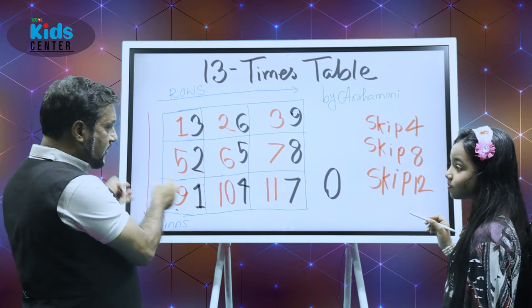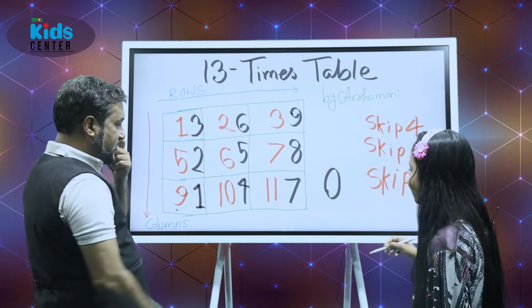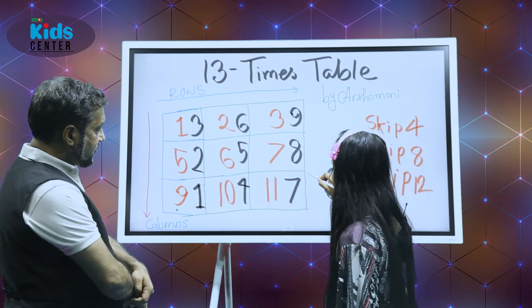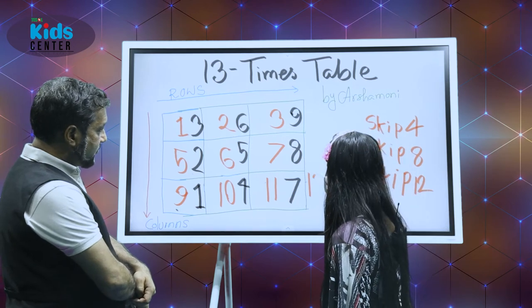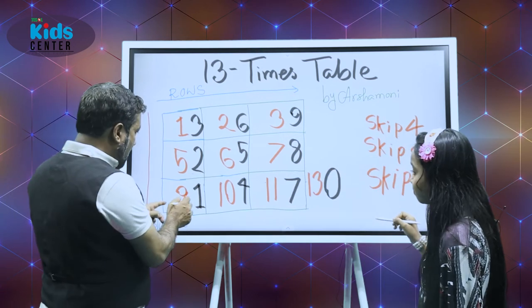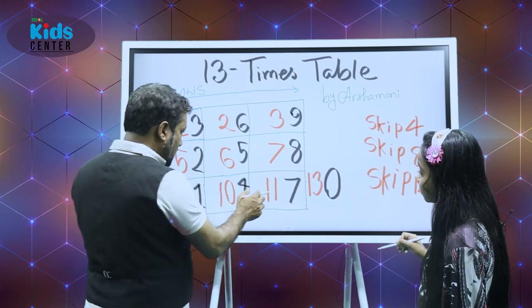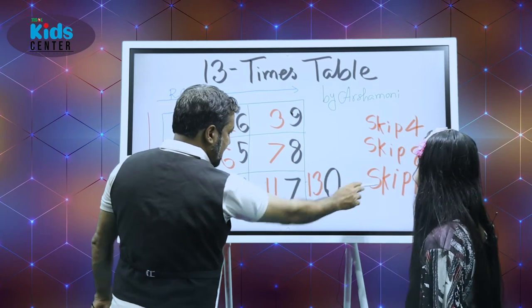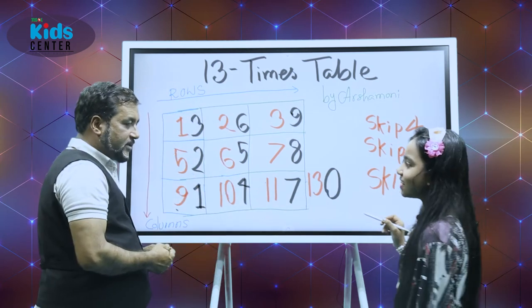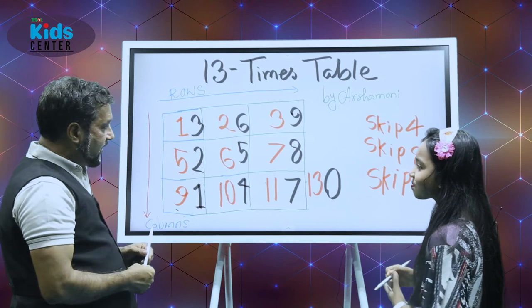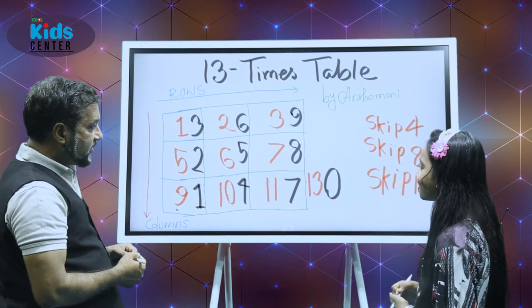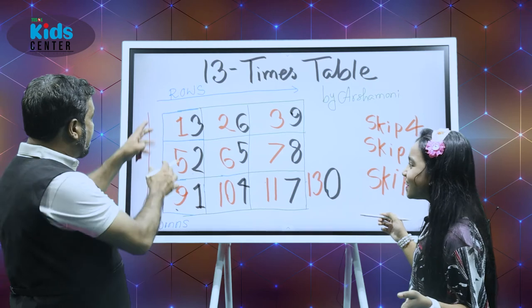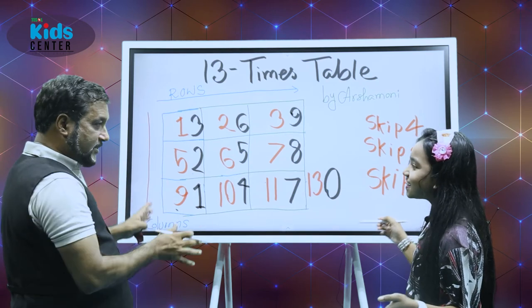Is it done? No, not yet. We have to put thirteen here, next to the zero. So all the numbers nine, ten, eleven, twelve — you skipped — and then you have written thirteen. Yeah. And then what is the next step? It's done. Thirteen times — it's all done.